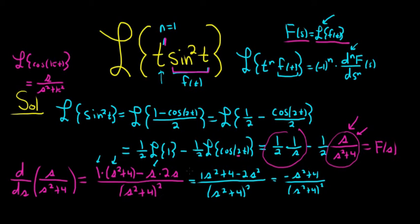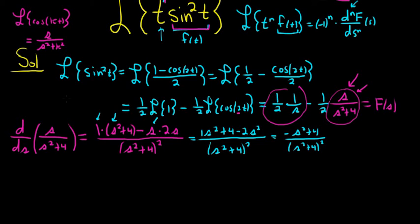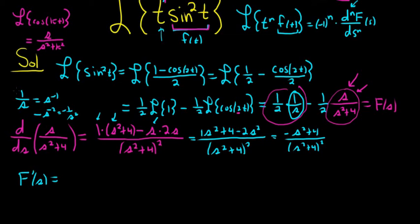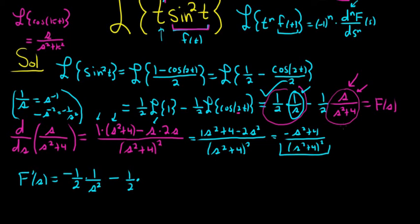Now let's formally write down the derivative of big F. The derivative of 1/s is negative 1/s² — I have that memorized; it comes from writing s to the negative 1 and subtracting 1 from the exponent. So F'(s) equals negative 1/2 times 1/s² — that handles the first term — minus 1/2 times (negative s²+4) over (s²+4) squared.